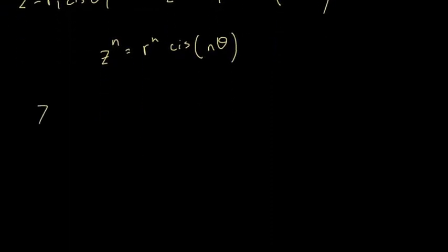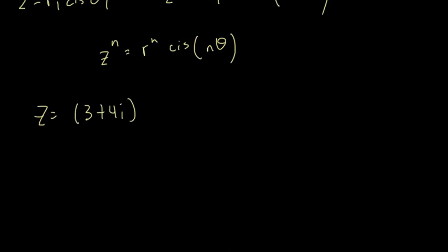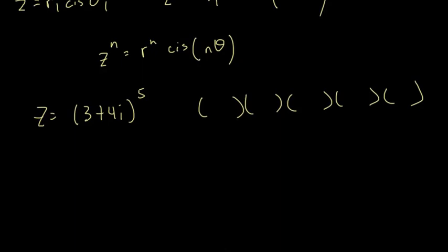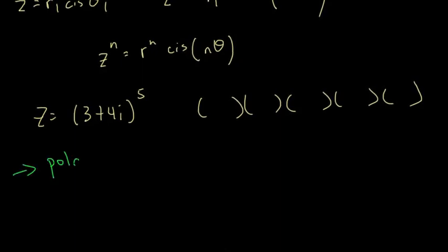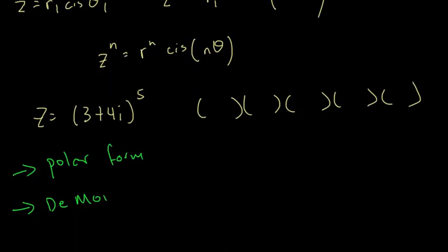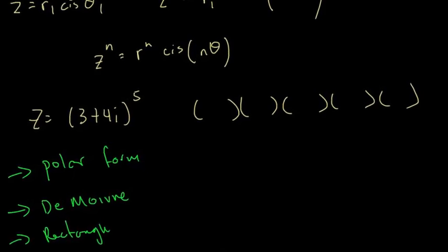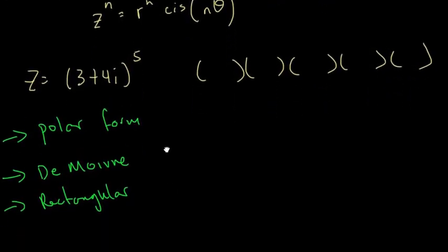This is very useful if you have, for example, (3 + 4i) raised to the power of 5. You could multiply it out five times, but that would take a very long time. Instead, you can convert it into polar form, use De Moivre's theorem to find the polar form raised to the power of 5, and then convert it back to rectangular form.